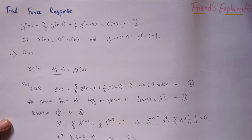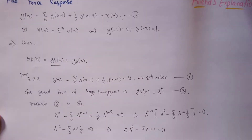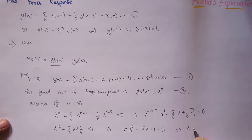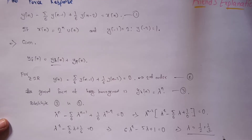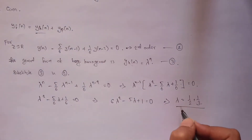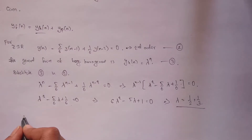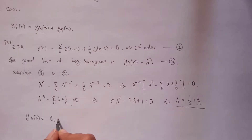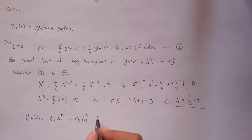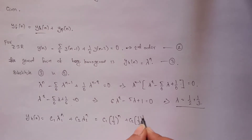Taking 6 as the LCM and simplifying, we solve the characteristic equation and get lambda values as 1/2 and 1/3. The roots are real and distinct, so the homogeneous equation is: y_h of n = c1 * (1/2)^n + c2 * (1/3)^n.